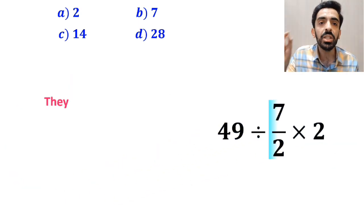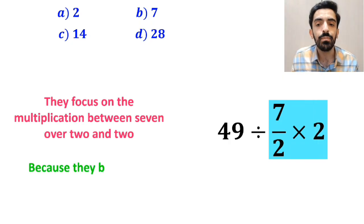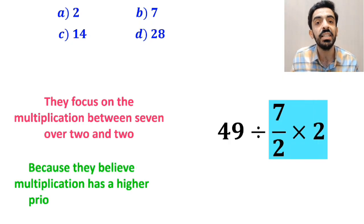In the next step, they focus on the multiplication between 7 over 2 and 2, because they believe multiplication has a higher priority than division.